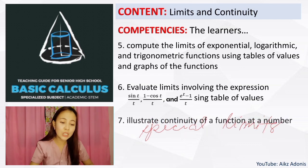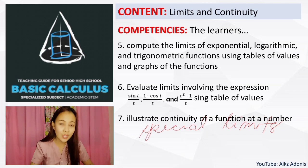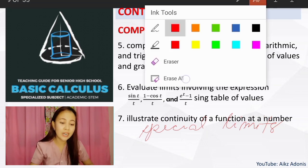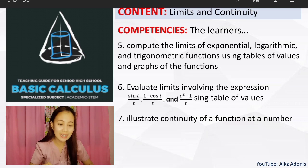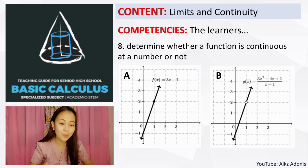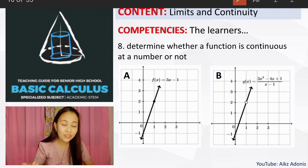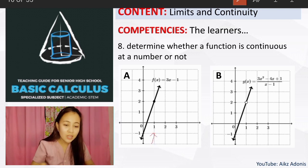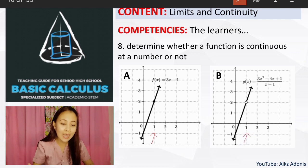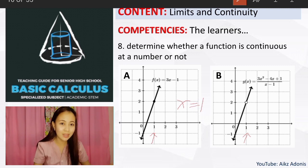Seventh, you are also going to illustrate continuity of a function at a number — whether the function is continuous at a number or not. In competency 8, you are going to determine whether a function is continuous at a number or not. We have here two graphs, graph A and graph B. Which graph is continuous at x equals 1? What do you think — is it graph A or graph B?